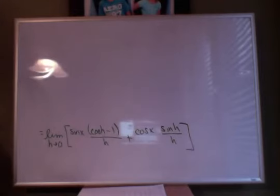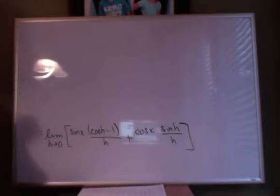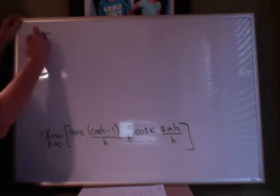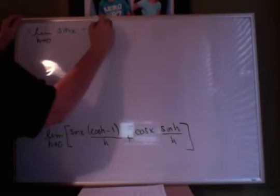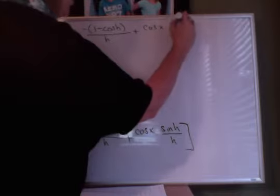The next thing is to recognize that we have a limit of a sum, which is the sum of the limits, and then limits of products, which are products of limits. We can take the limit of sine x separately. The first part with (cosine H minus 1) over H is very similar to our theorem, but it's not exactly the same — the theorem was (1 minus cosine). So to match that form, I'm going to take out a negative 1, giving us negative sine x times (1 minus cosine H) over H, plus cosine x times sine H over H.